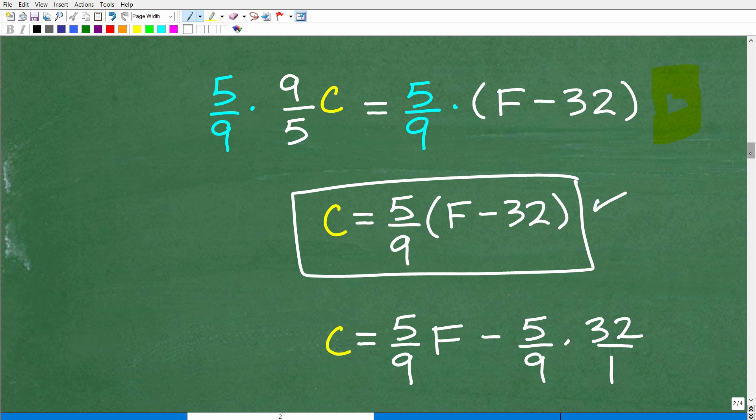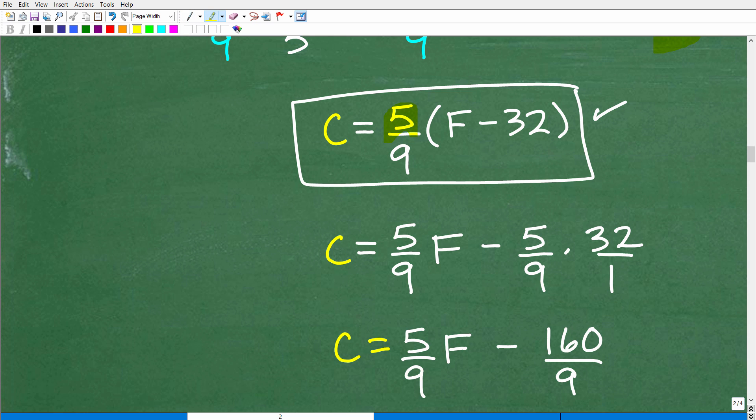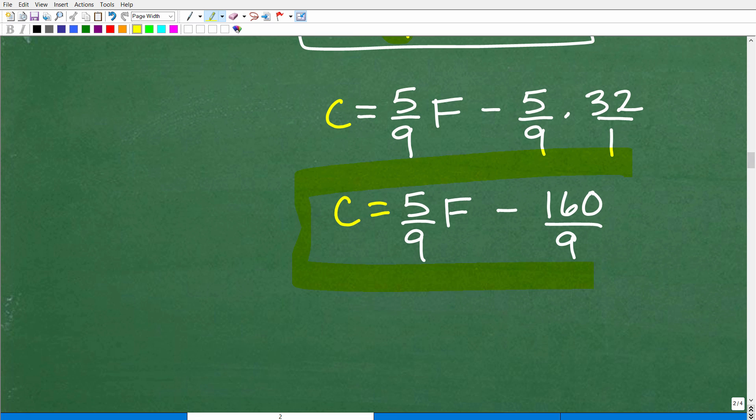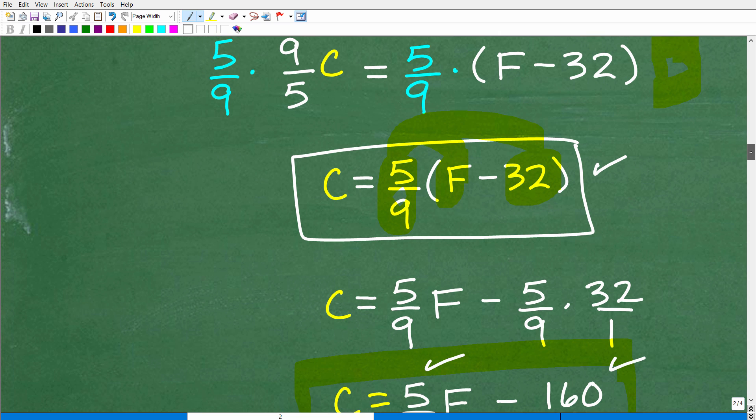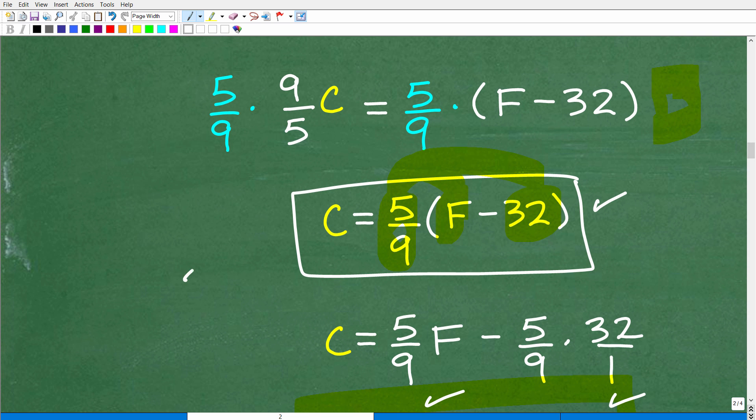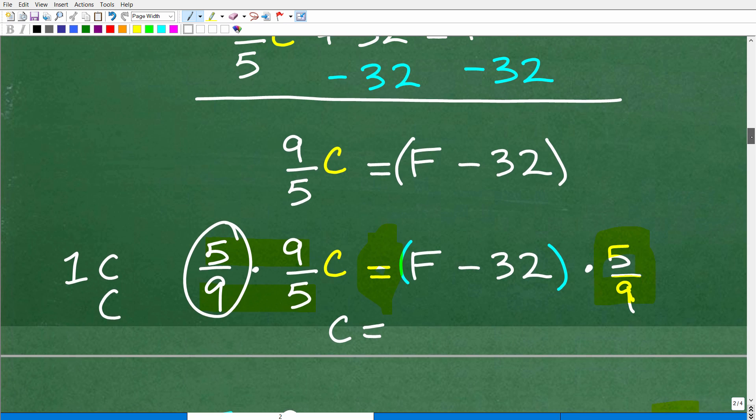Now, this is one form of the answer. Now, some of you might be saying to yourself, well, do I have to distribute this 5/9? Do I have to multiply it by that F and that 32? Well, you could. You certainly could. And if you did that, you would come up with this equivalent formula. And you could even turn this into decimals as well if you wanted to. But basically, the formula that I would be looking for if I was your math teacher is this. Okay, so we just solved for C given our formula for Fahrenheit.